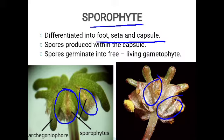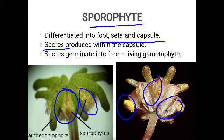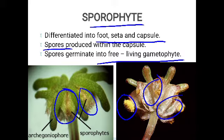Some cells present in the capsule undergo meiosis and produce haploid spores. They are haploid because meiosis reduces the chromosome number to half — the daughter cells have only one set of chromosomes. These haploid spores are produced within the capsule. When mature, they are released out, and when they come in contact with a suitable substratum, they develop into a new free-living gametophyte.